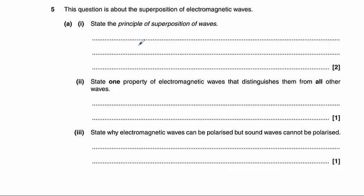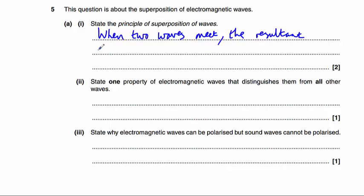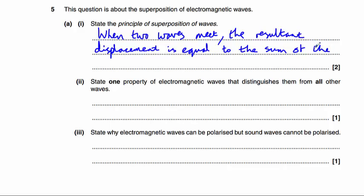Question 5 is about superposition of electromagnetic waves. It asks us to begin by stating the principle of superposition of waves. This is something you just need to memorise: when two waves meet, the resultant displacement is equal to the sum of the displacements of each wave.